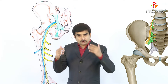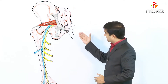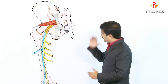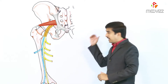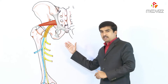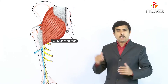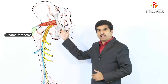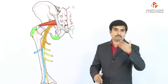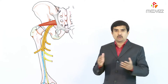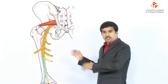After formation, the sciatic nerve passes through the greater sciatic foramen below the piriformis to enter into the gluteal region. It descends downward and slightly laterally under the cover of the gluteus maximus, midway between the greater trochanter and the ischial tuberosity, along the back of the thigh.